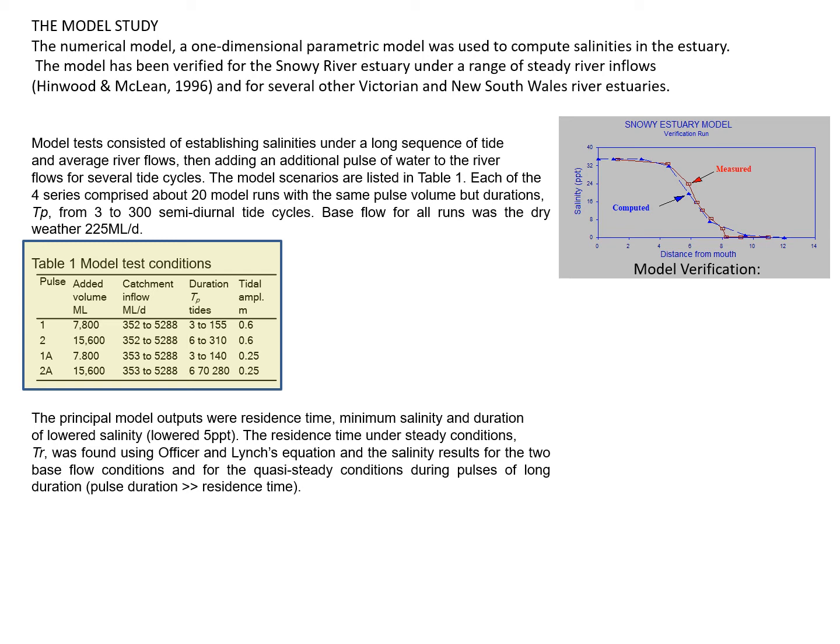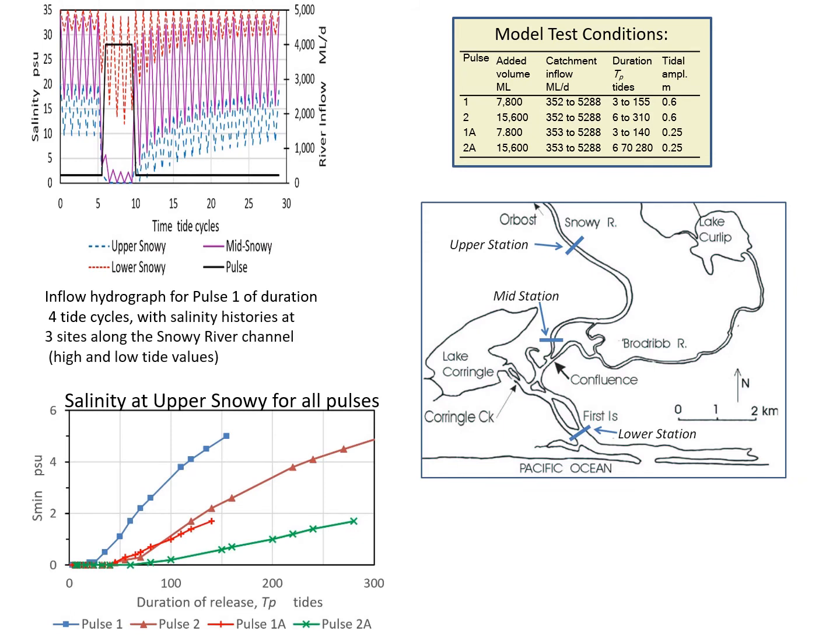The residence time under steady conditions was calculated using Ofcer and Lynch's 1981 equation, and the salinity results were obtained for the two base flow conditions and for the quasi-steady conditions during pulses of long duration. This next slide illustrates some of the model results. In the upper left of the slide, you can see a plot of one of the pulse examples for Pulse 1, running for only 30 tides.